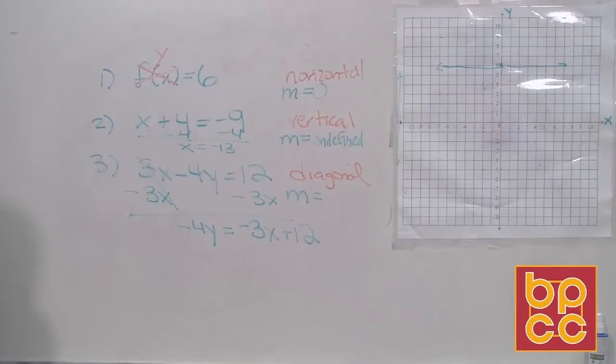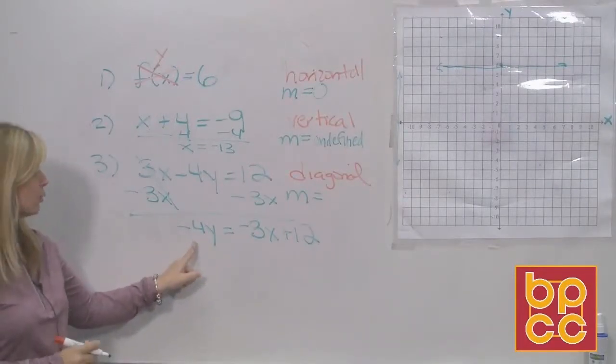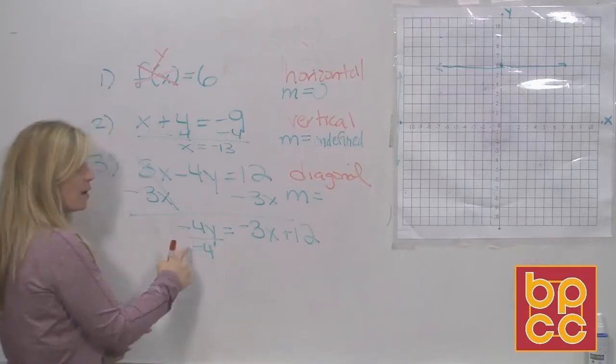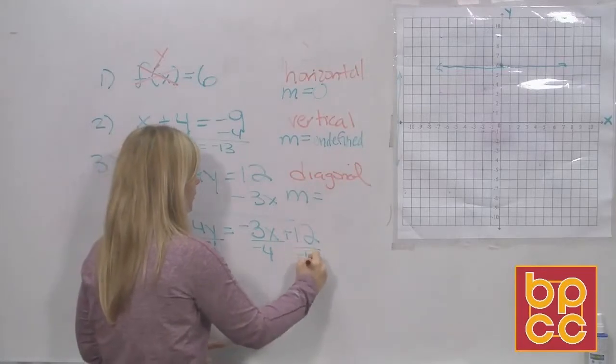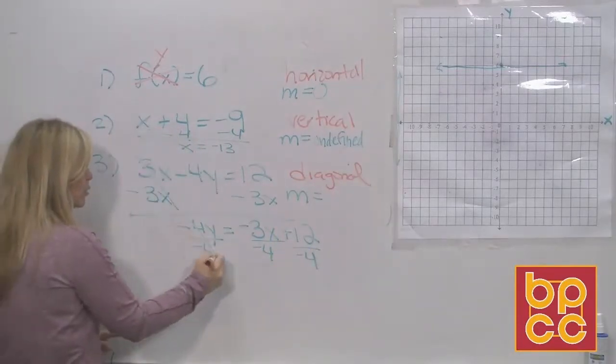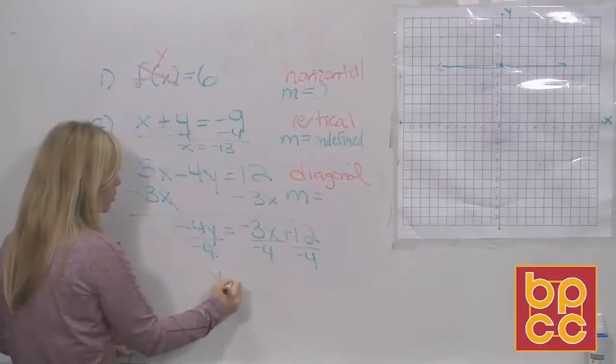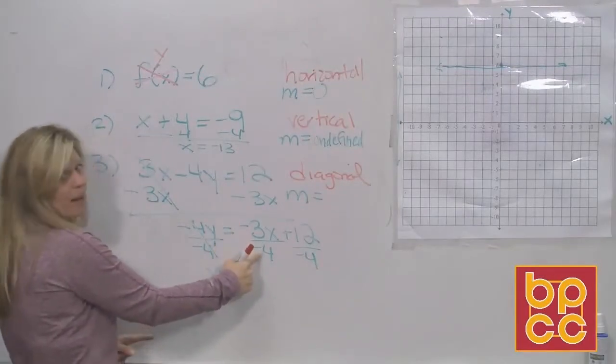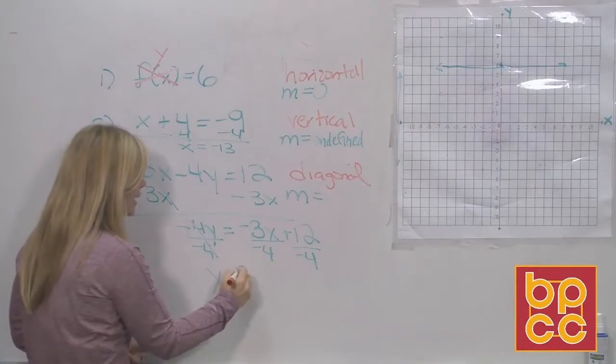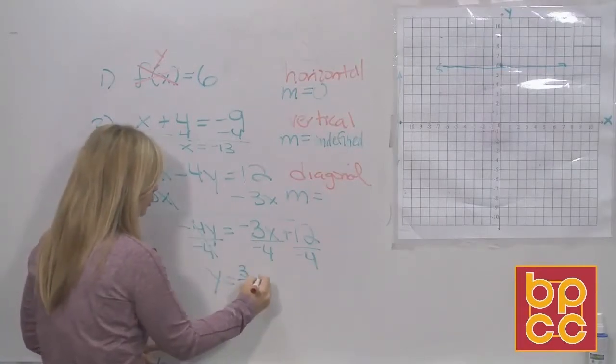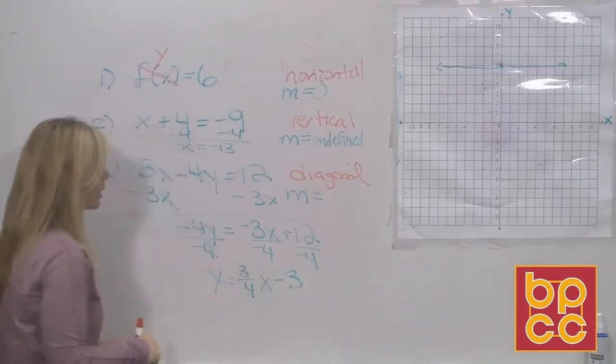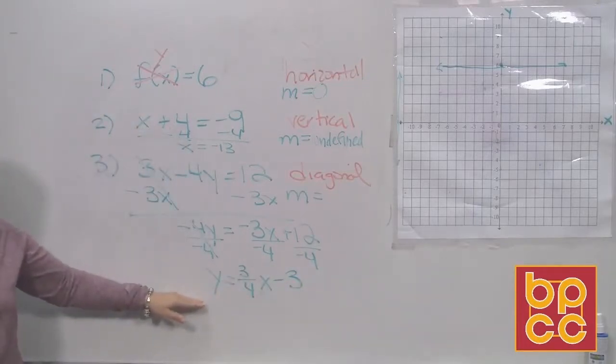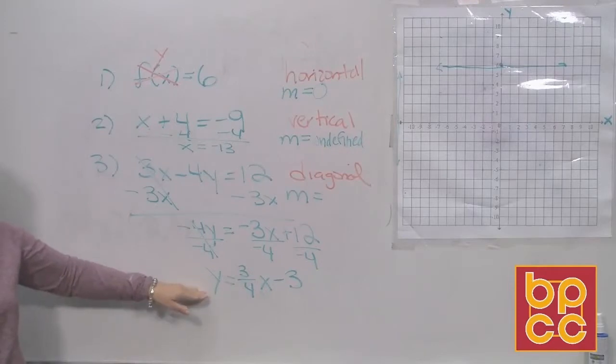Do we have it in slope-intercept form? No, we do not. The y is not by itself. So to move the negative 4, we have to do division. And if we divide one term by negative 4, we divide all the terms by negative 4. Okay, we did this in the last module. Two negative 4s cancel out. There's the y equals. 3 doesn't divide by 4, but a negative over a negative is a positive. So that's 3/4 x. 12 divided by negative 4 will divide and gets negative 3. So in the last module, once you got the diagonal line in slope-intercept form, you were able to draw the picture of it.